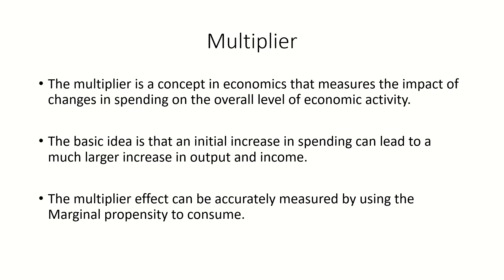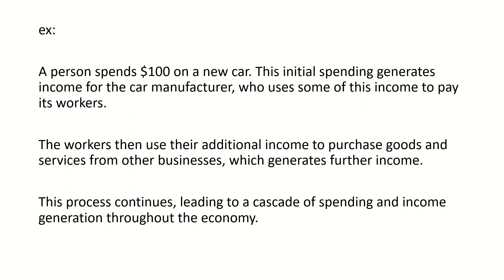Now let's talk about the multiplier — this is a very important concept. The multiplier is a concept in economics that measures the impact of changes in spending on the overall level of economic activity. The basic idea is that an initial increase in spending can lead to a much larger increase in output and income. The multiplier effect can be accurately measured by using the marginal propensity to consume. When an initial spending or injection is made to an economy, it will multiply and create more output and income rather than the initial value. For example, a person spends $100 on a new car. This initial spending generates income for the car manufacturer, who uses some of this income to pay its workers. The workers then use their additional income to purchase goods and services from other businesses, which generates further income.